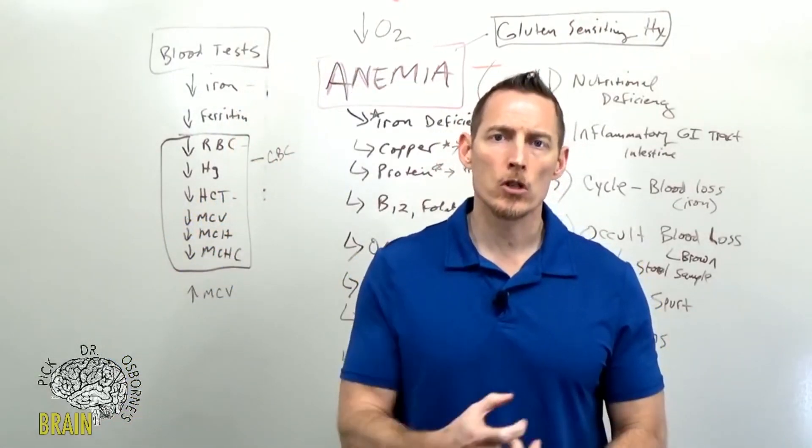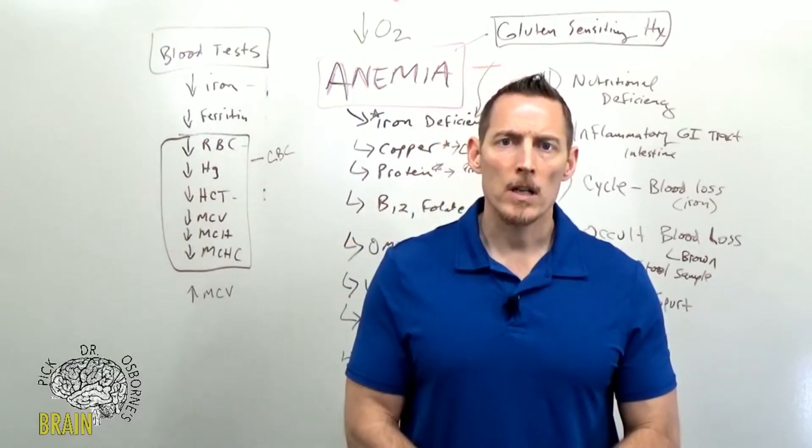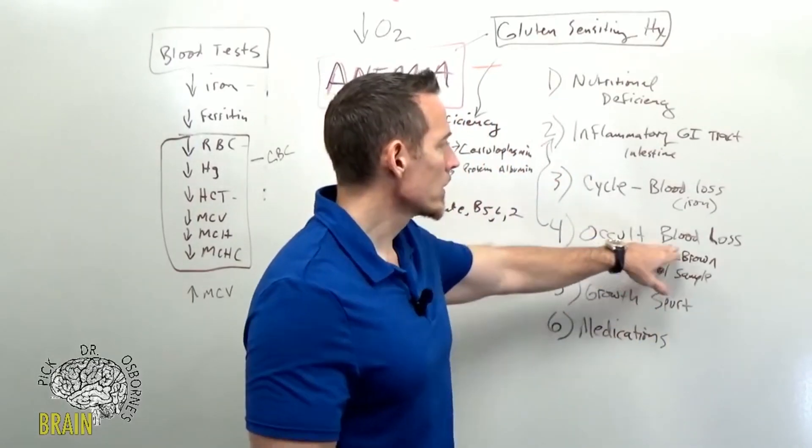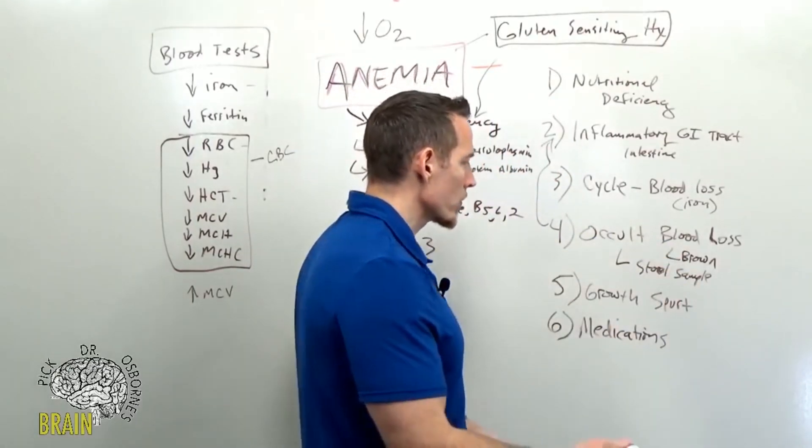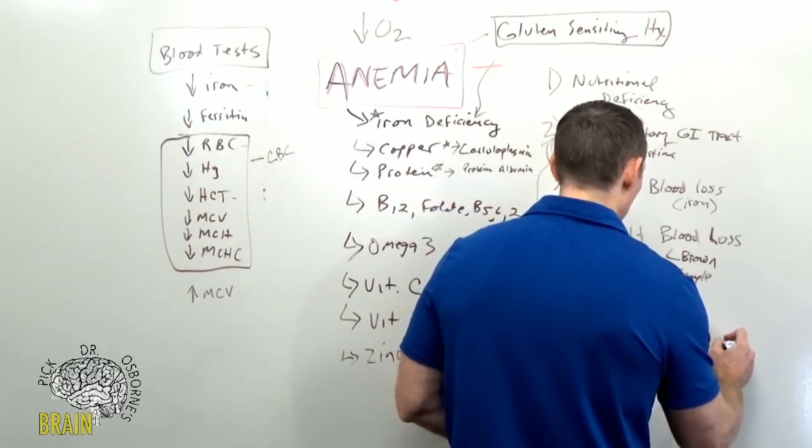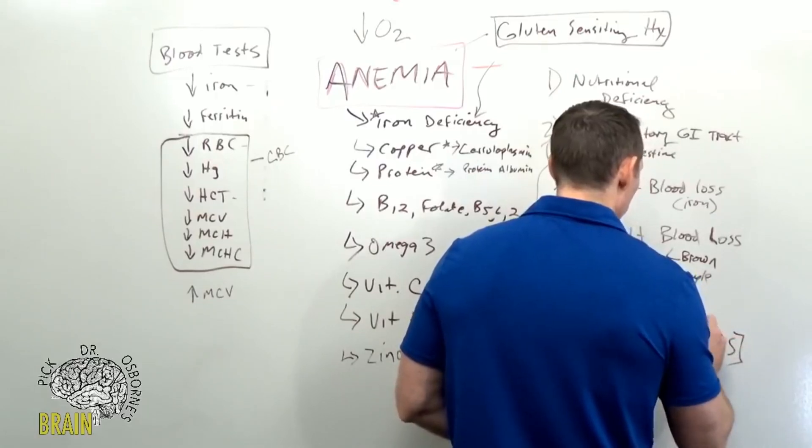Other medications that are a common cause of occult blood loss are your non-steroidal anti-inflammatories. So if you take NSAIDs—aspirin, ibuprofen, Celebrex, naproxen—these medications create, even at small doses, erosion of the mucosal lining of the stomach, the esophagus, and the small intestine.